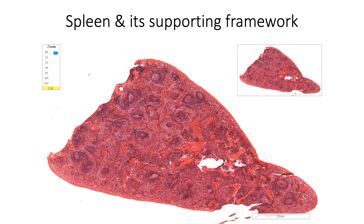Spleen is located in the left hypochondriac region in the abdomen with dual functions of secondary lymphatic organ and vascular filtration. The entire organ is covered by serosa, or the mesothelium of peritoneum, except at the hilum and along the sides of attachment of peritoneal ligaments.